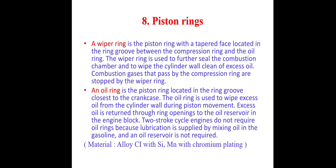The third ring is the oil ring. These piston rings are located in the ring grooves closest to the crankcase. The oil rings are used to wipe excess oil from the cylinder wall during piston movement, and the excess oil returns through the ring openings to the oil reservoir in the engine block. The material used for these oil rings is alloy cast iron with silicon, manganese, and chromium plating.